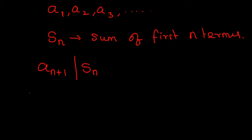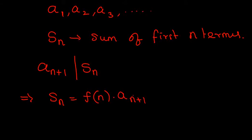That means S_n is a multiple of a_{n+1}, and we can write S_n as f(n) times a_{n+1}. Now f(n) is some factor — we let that be a function of n. So S_n equals f(n) times a_{n+1}, and this is our user-defined function; it can be anything.